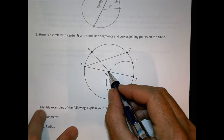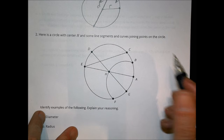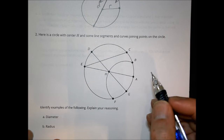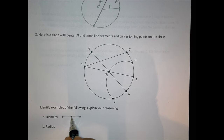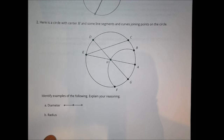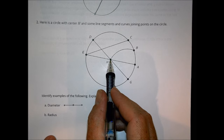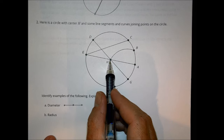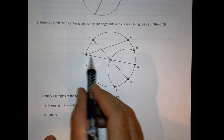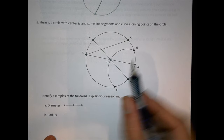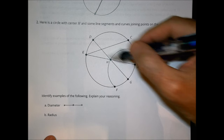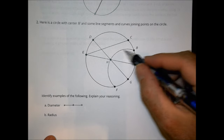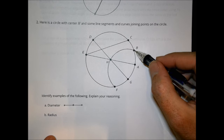Number two shows a circle with H as the center and some line segments and curves joining points on the circle. Identify the diameter and explain your reasoning. The diameter goes from edge to edge through the center as a straight line. Looking at center point H, I need a line that goes edge to edge through the center — E to A works great, and so does D to G.